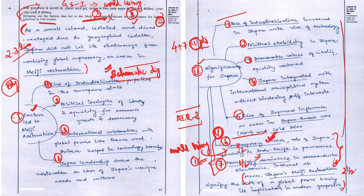Looking at how many marks he would have received: the nine normal points would earn roughly four marks in the body, while the two unique points deserve an extra half mark each — about one additional mark that other candidates won't get. The introduction accounts for half a mark and the conclusion another half. So overall: four marks from normal body points, plus one mark for unique points, plus half for introduction, plus half for conclusion — giving approximately six out of ten.